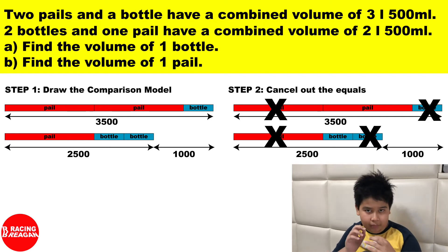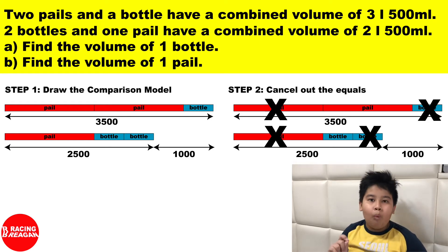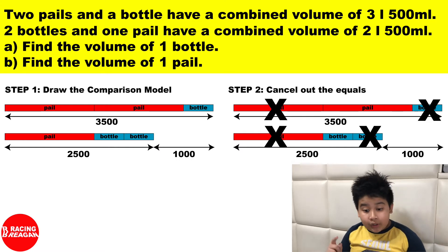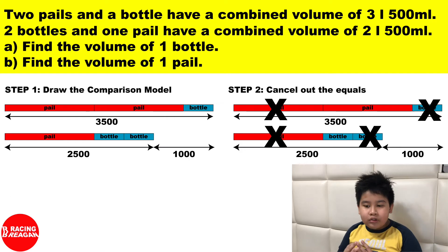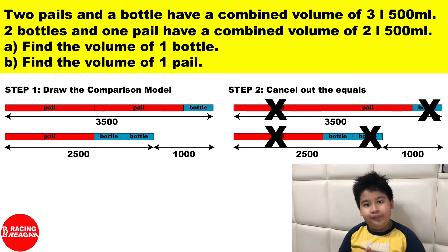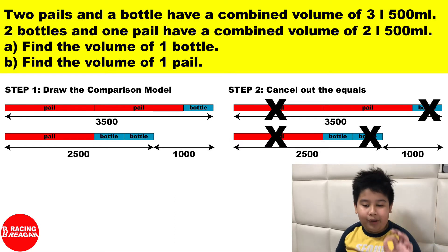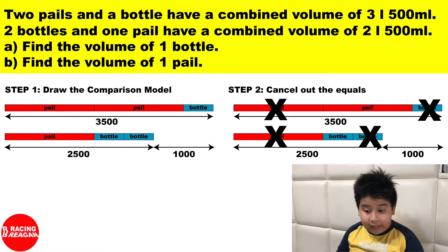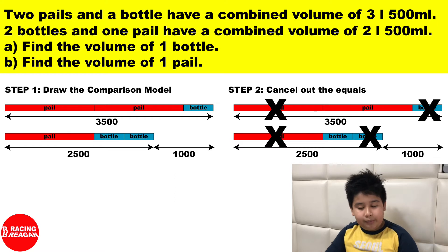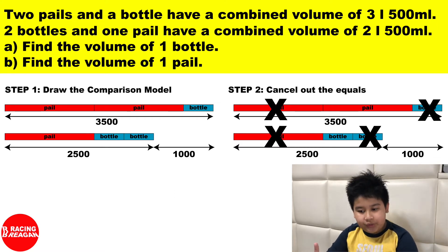Once you've labeled both models, you can see that 3500 ml and 2500 ml have a difference of 1000 milliliters. So label that 1000 difference on your model. The next step is to cancel out equal parts.